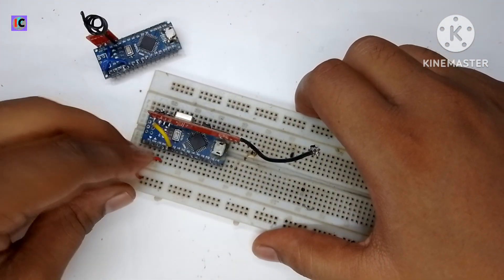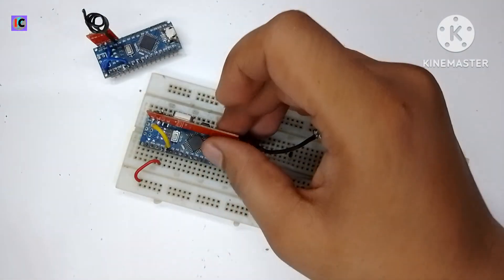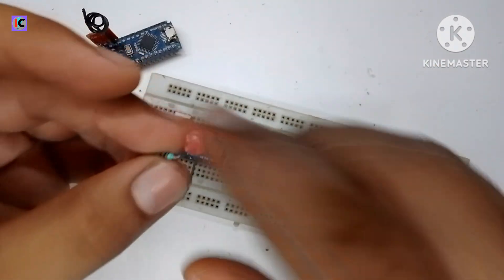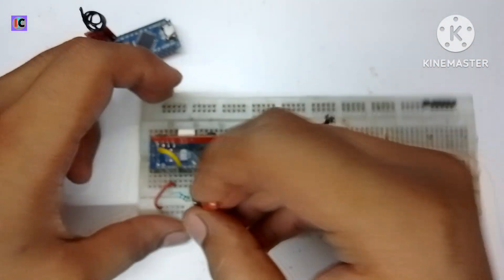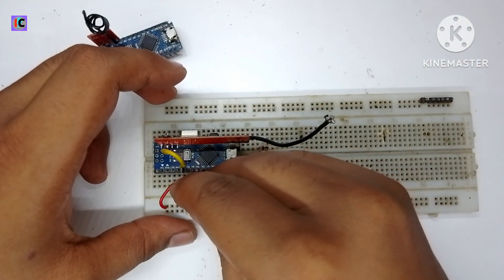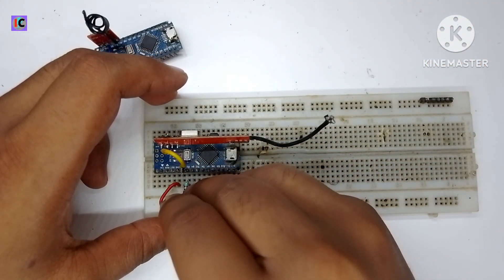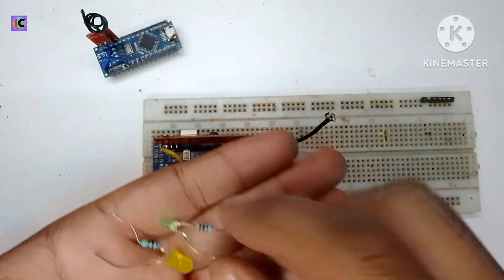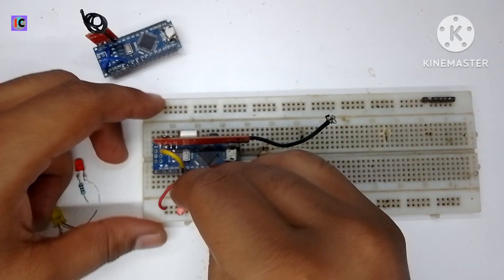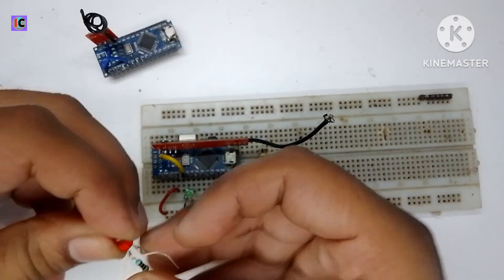Here for the 5-channel demonstration I am using LEDs and connecting them to digital pins 2, 3, 4, 5, and 6 respectively. All the negative terminals of the LEDs will be common at the ground terminal.